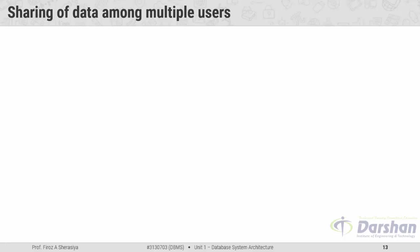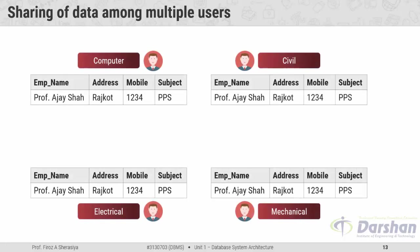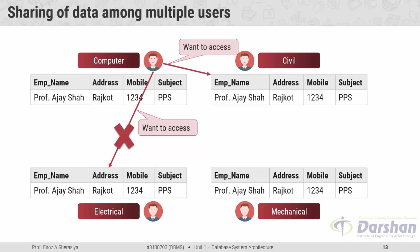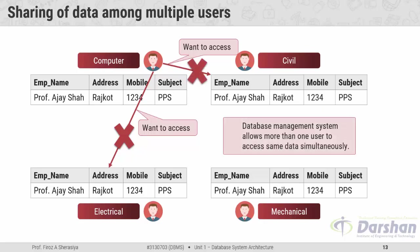Next, the sixth advantage: sharing of data among multiple users. Take the previous example of 4 departments with 4 HODs. In a file based system, the HOD of the computer department cannot access data of the electrical department or the civil department. But if we use a database management system, DBMS will allow more than one user to access the same data simultaneously.